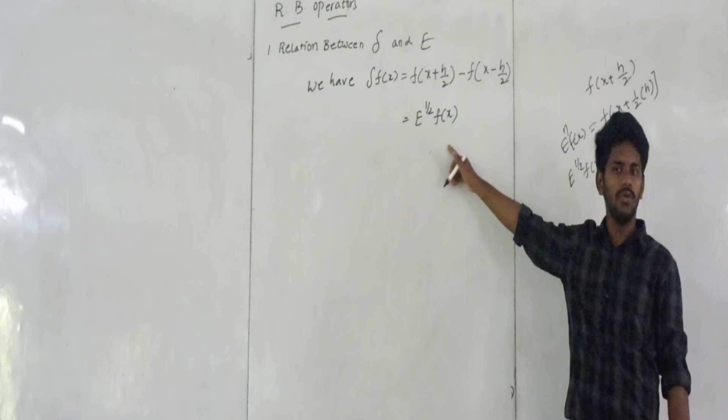It is f of x plus n h only. The number goes to e to the power n, place n equal to 1 by 2 only. So the answer is e to the power of 1 by 2 f of x.